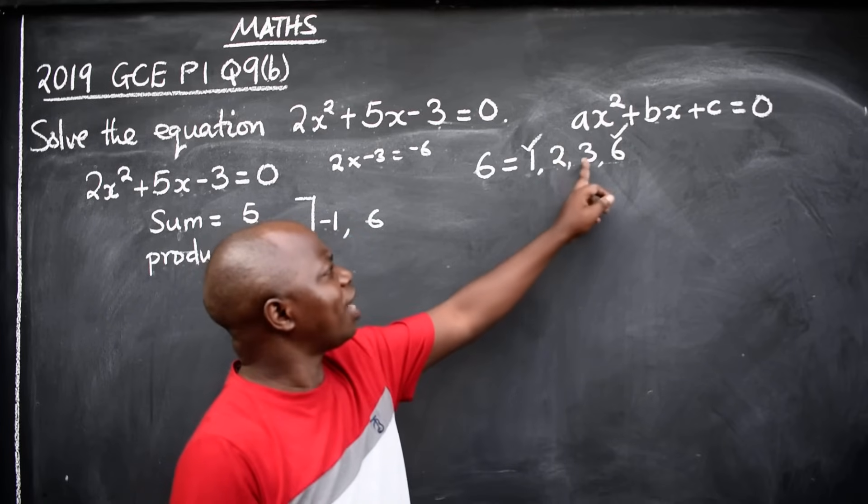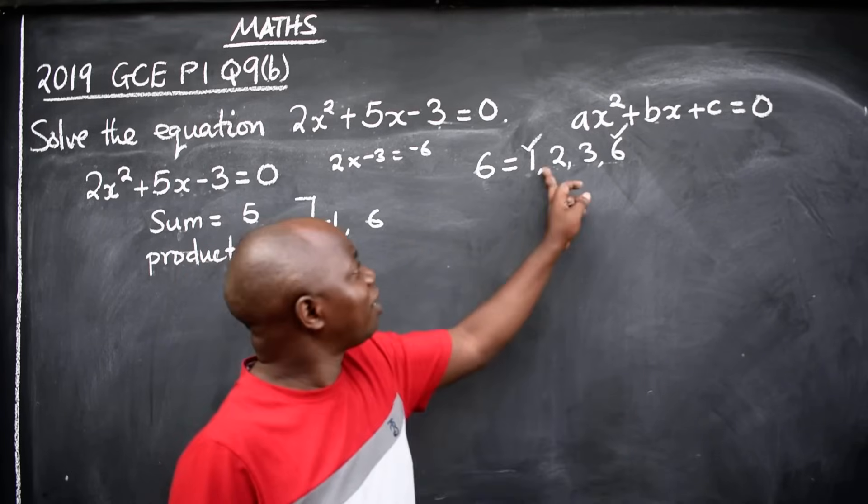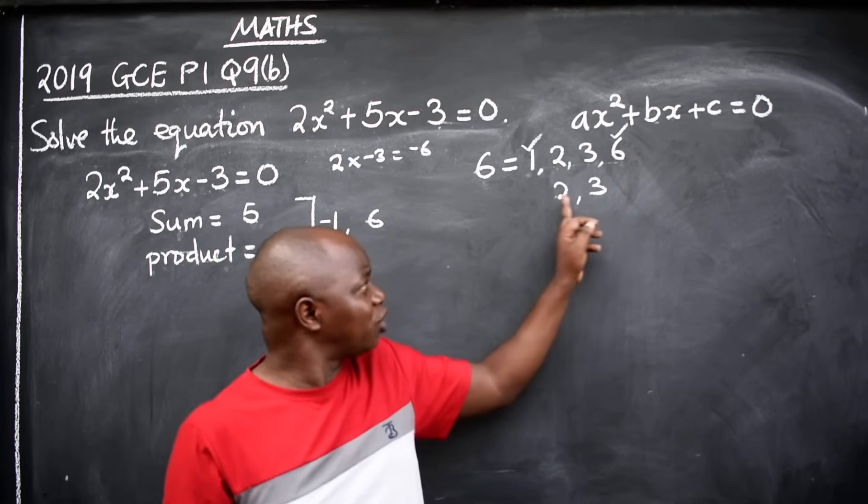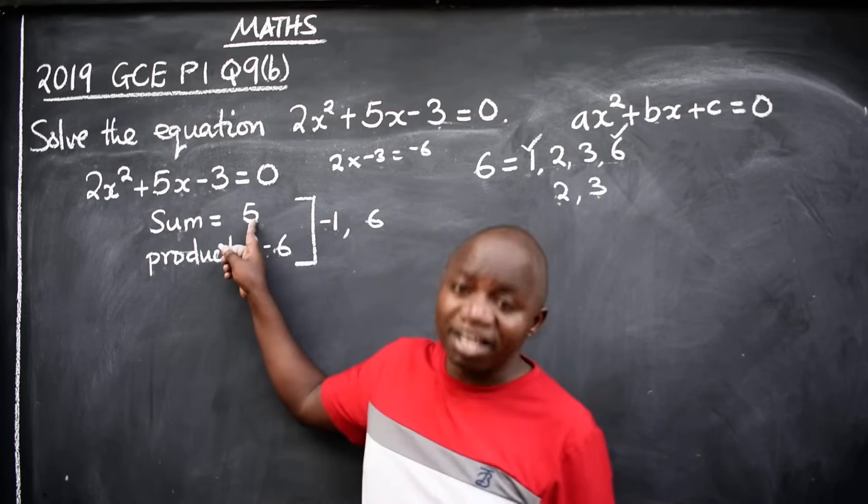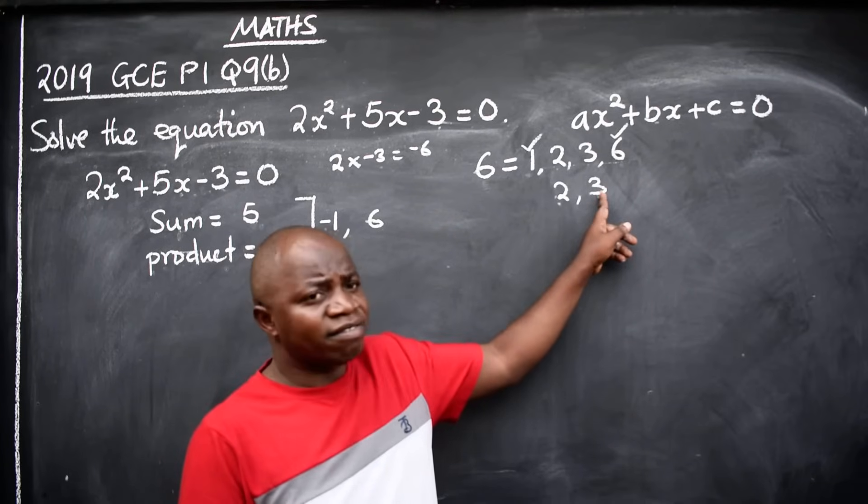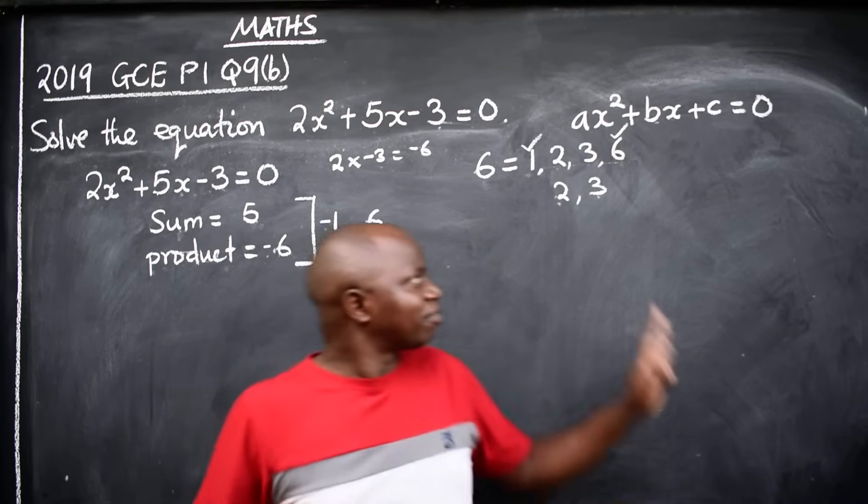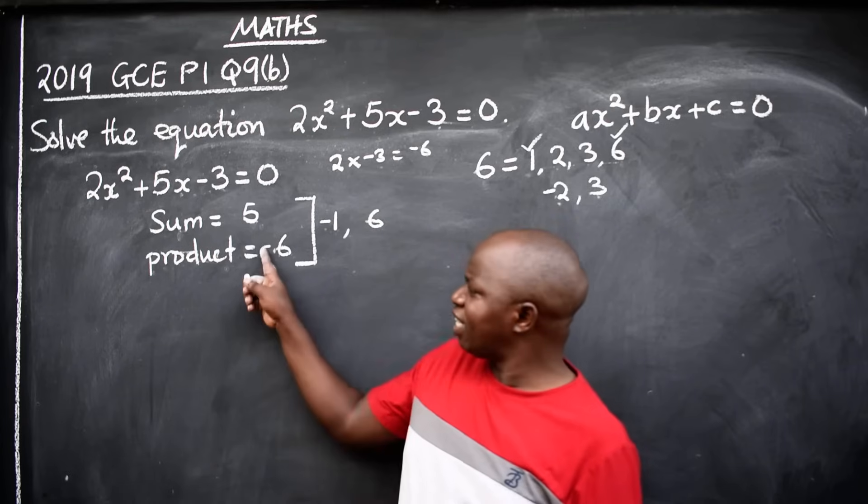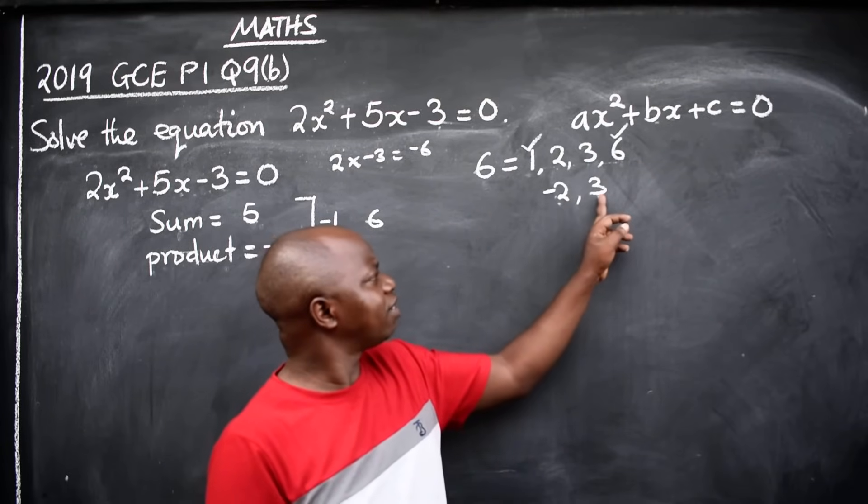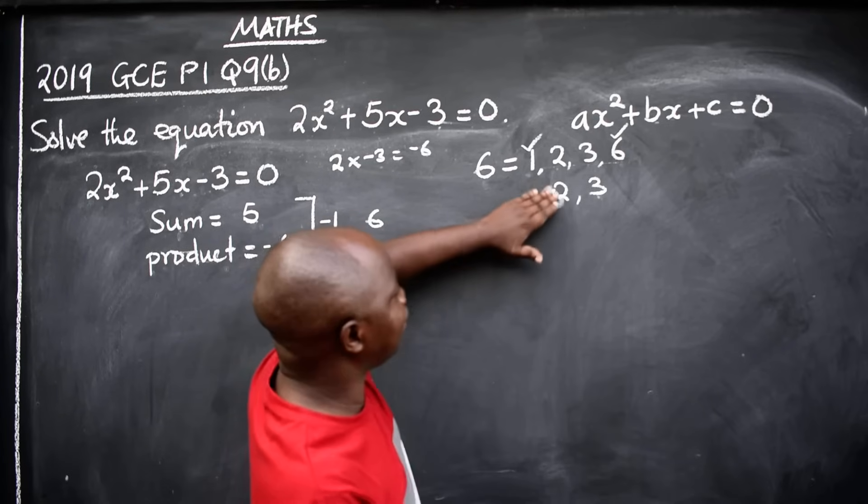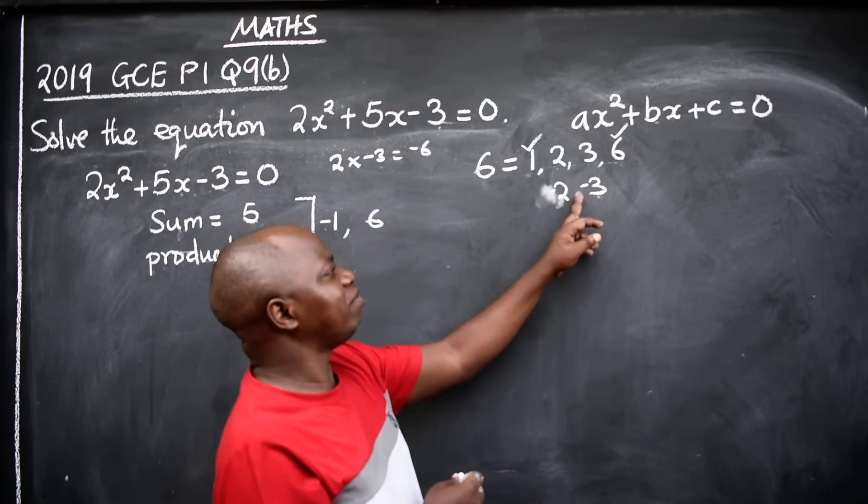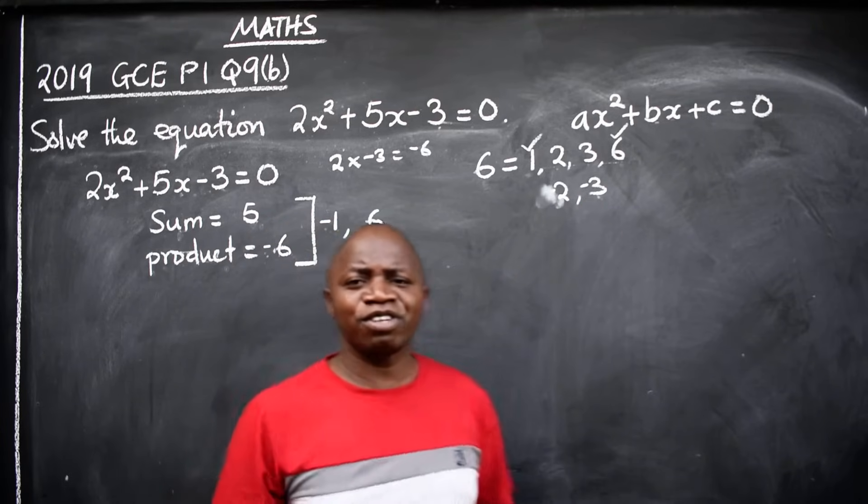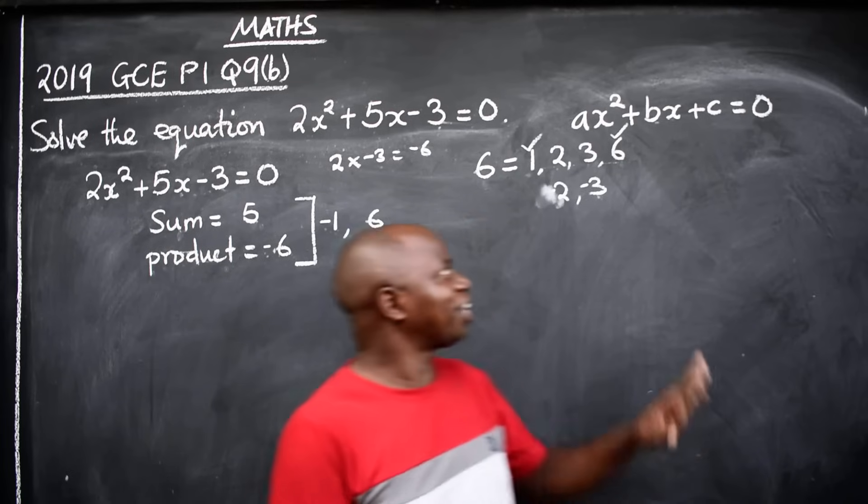Others will say even 2 and 3 can qualify. Are you sure? Let's try 2 and 3. When I add 2 + 3, I get 5, yes. But when I multiply 2 × 3, am I going to get -6? No. -2 × 3 gives -6, but -2 + 3 is not 5. 2 + (-3) is also not 5. So you can see that the only two numbers are -1 and 6.